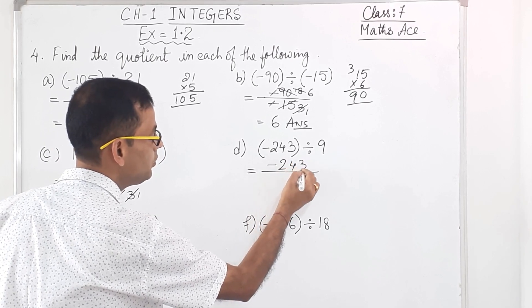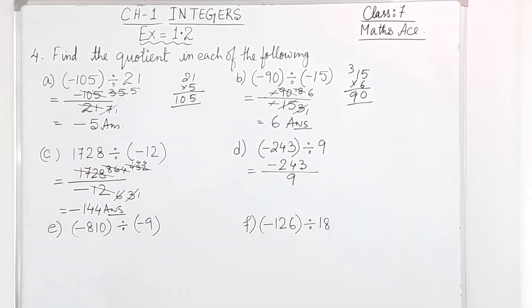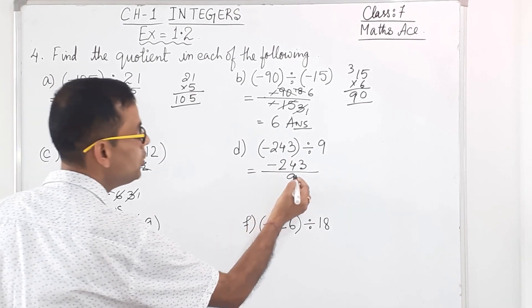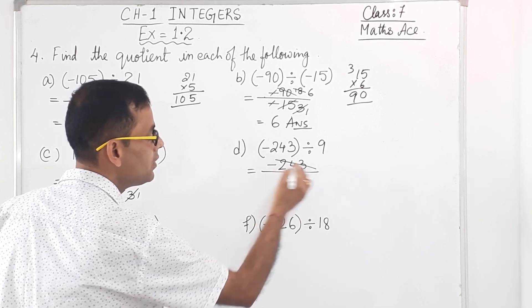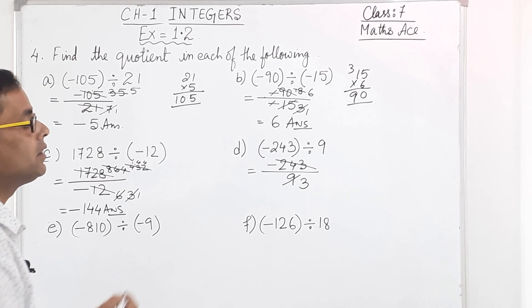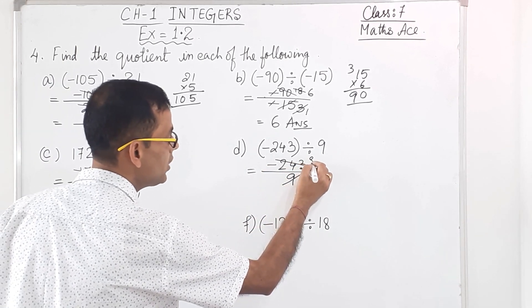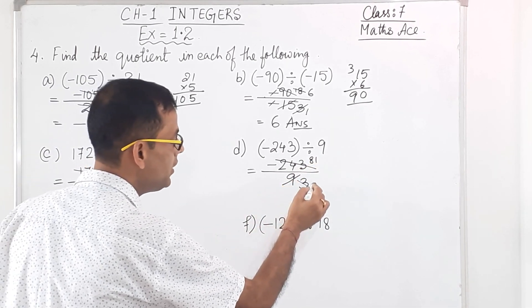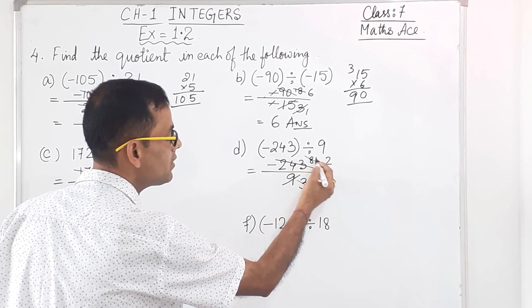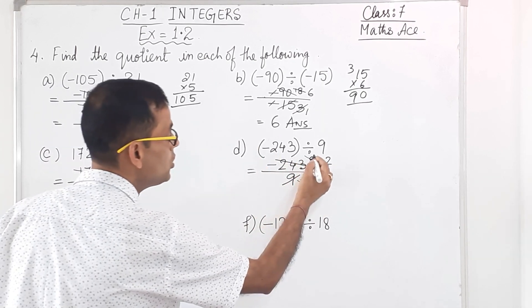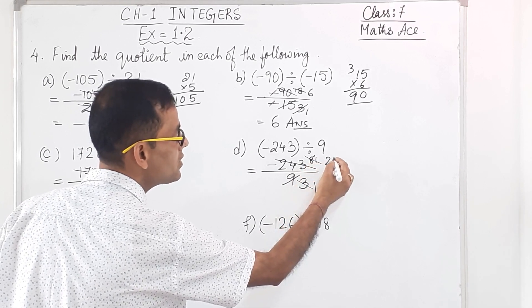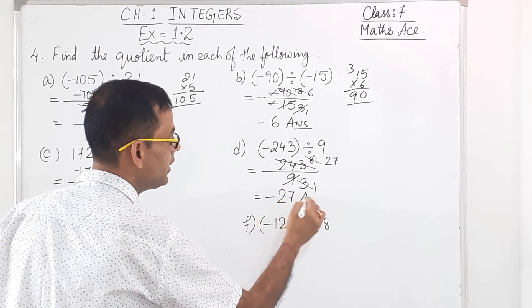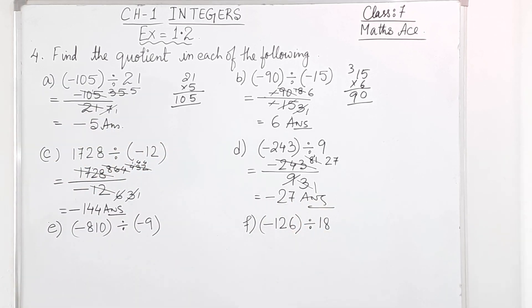Next one, D: minus 243 divided by 9. You can cut directly with 9, or break it: cut with 3 first — 3 into 9 is 3, 3 into 243 gives 81, then 3 into 81 gives 27. So the answer is minus 27.